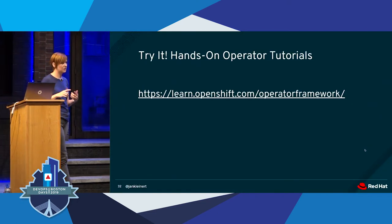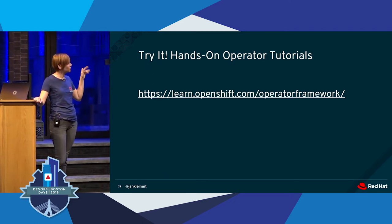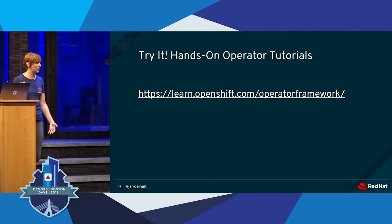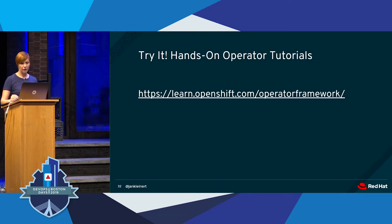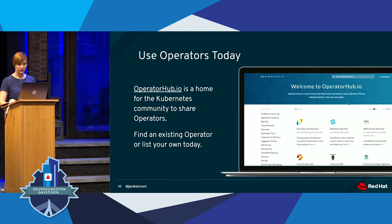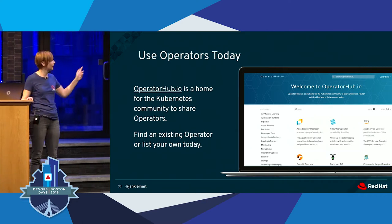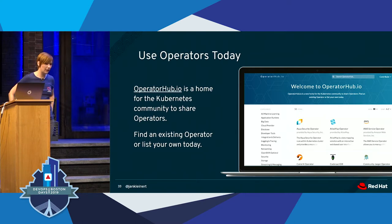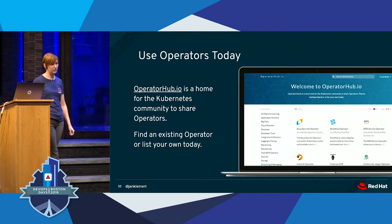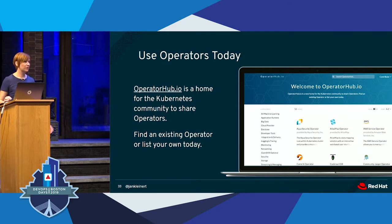You can try this and other hands-on tutorials at learn.openshift.com/operator-framework. There are somewhere between six and nine tutorials now, plus a refresher on the Kubernetes API. You can also use operators today—operatorhub.io is a website where you can see operators created by the community, with instructions on how to install them on your Kubernetes clusters. There's also an even more exhaustive list in the operator-framework GitHub organization under the repo called awesome-operators.